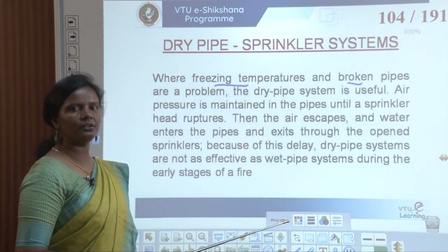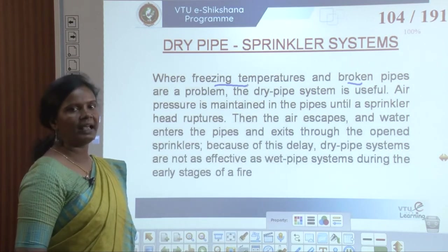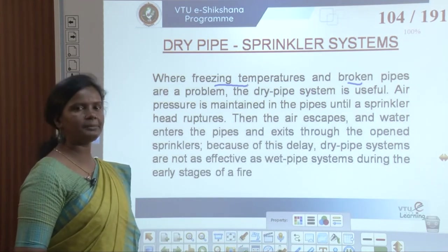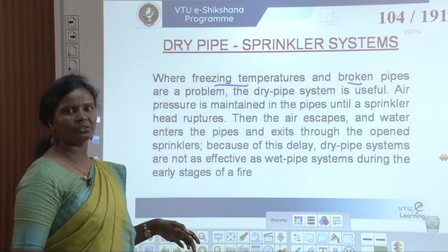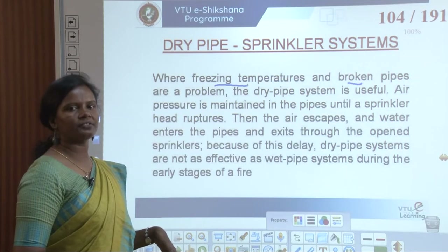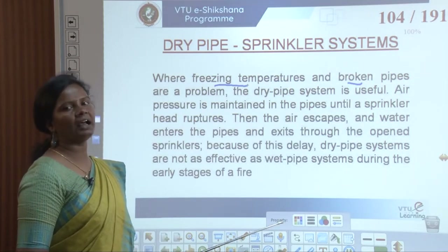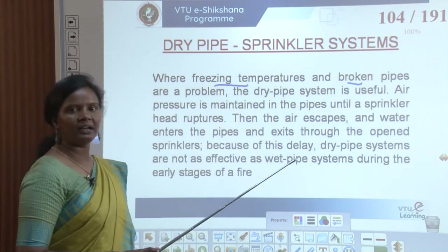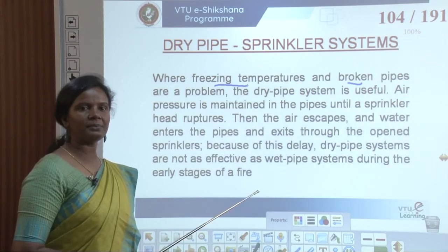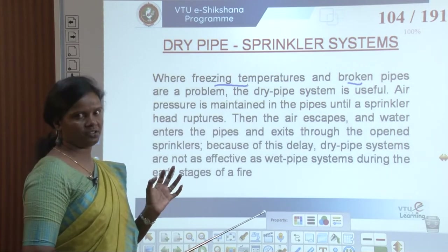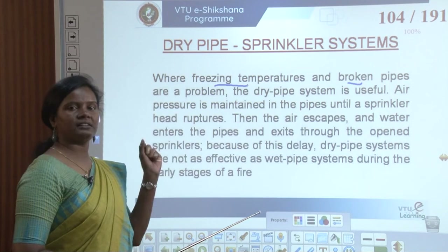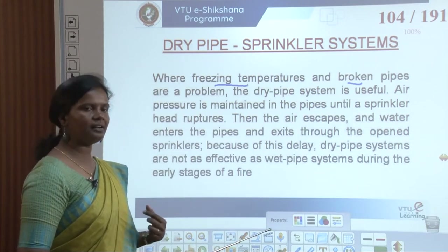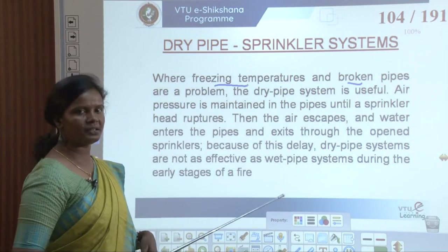The dry pipe system is useful in freezing or broken-pipe situations. Air pressure is maintained in the pipes until a sprinkler head ruptures; then air escapes and water enters the pipes through open sprinklers. Because of this delay, dry pipe systems are not as effective as wet pipe systems during the early stages of a fire, as there is a possibility of fire increasing during the gap. Unfortunately, in freezing temperatures this system must be used.